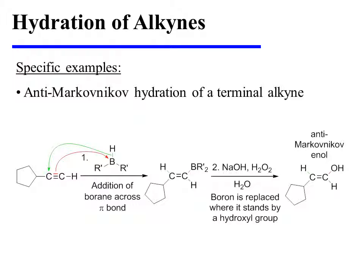The same terminal alkyne can be subjected to hydroboration-oxidation to afford a different product. The reaction begins with the attack of the alkyne pi bond on the electrophilic boron. This places developing partial positive character on the carbon that is more highly substituted — that is the interior alkyne carbon. This partial positive character draws in the electrons from a boron-hydrogen bond, and the net result is the addition of both hydrogen and boron across a pi bond.